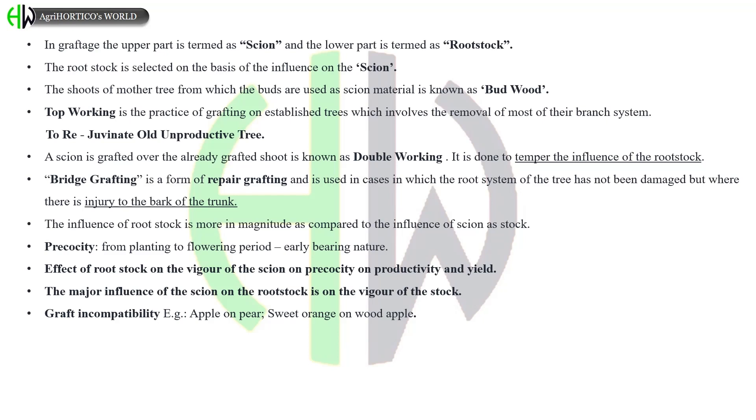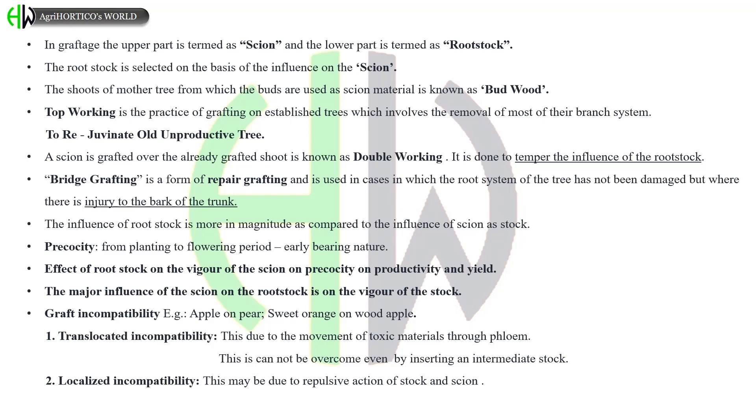Graft incompatibility examples are apple on pear, sweet orange on wood apple. Types of graft incompatibility: translocated incompatibility, this is due to the movement of toxic materials through phloem. This cannot be overcome even by inserting an intermediate stock. Localized incompatibility may be due to repulsive action of stock and scion tissue. This can be overcome by inserting an intermediate stock.